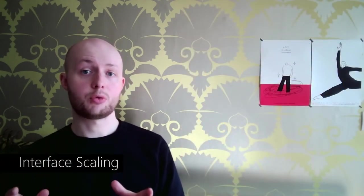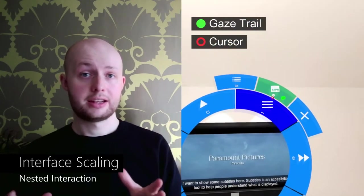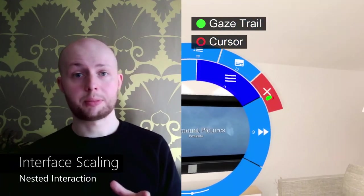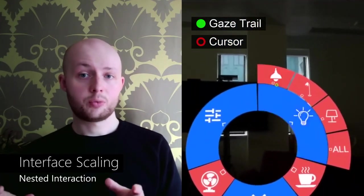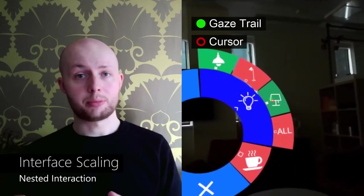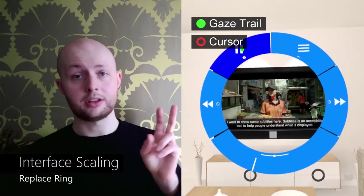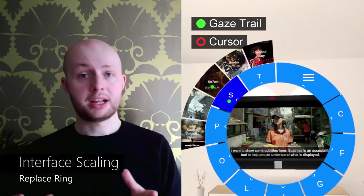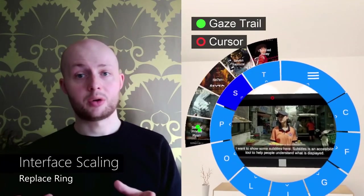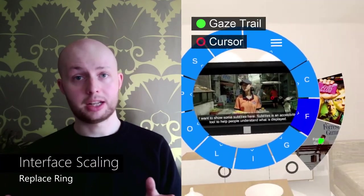Radii supports scaling in three ways to support larger interfaces and increased functionality. First, nested interaction is supported by expanding the interface on outer rings. Hidden nested widgets are displayed when gazing on the parent widget, which can then be selected. Second, the interface can replace widgets on a ring via toggling, allowing a single ring to store a large number of widgets without relying on multiple layers.